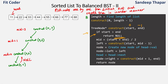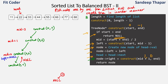Left at construct(0,0) is null. We create a new tree node with the value of head, which is 11. We set the left of this node to null. Then we move head to the next pointer, so head comes to 22. We call construct(mid+1, end) = construct(1, 0), where start is greater than end, so it returns null. So the right of node 11 is also null. We return node 11 to the calling function — construct(0,0) returns the node 11.